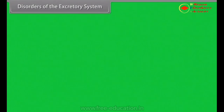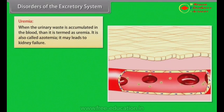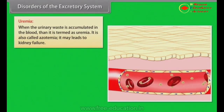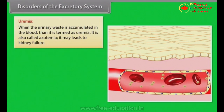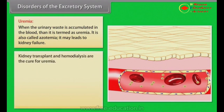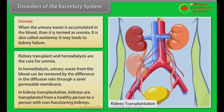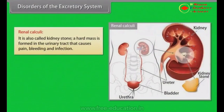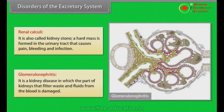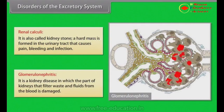Disorders of the excretory system. Uremia: when urinary waste accumulates in the blood, it is termed uremia, also called azotemia. It may lead to kidney failure. Treatments include kidney transplant and hemodialysis. In hemodialysis, urinary waste is removed from the blood by the difference in diffusion rate through a semi-permeable membrane. In kidney transplantation, kidneys are transplanted from a healthy person to a person with non-functioning kidneys. Renal calculi (kidney stones): a hard mass formed in the urinary tract that causes pain, bleeding, and infection. Glomerulonephritis: a kidney disease in which the part of the kidneys that filters waste and fluids from the blood is damaged.